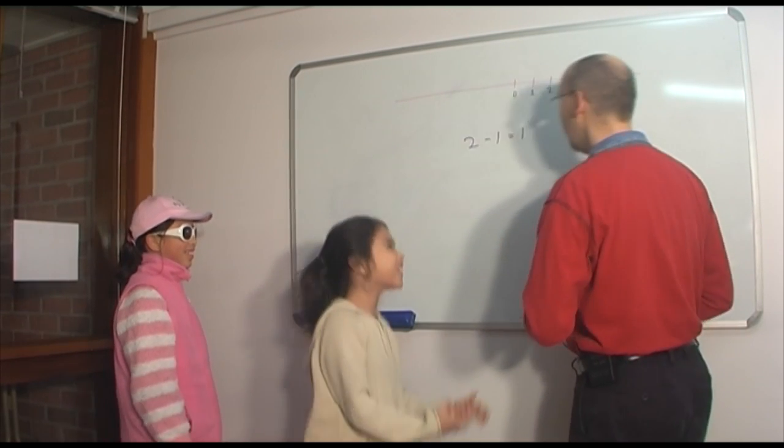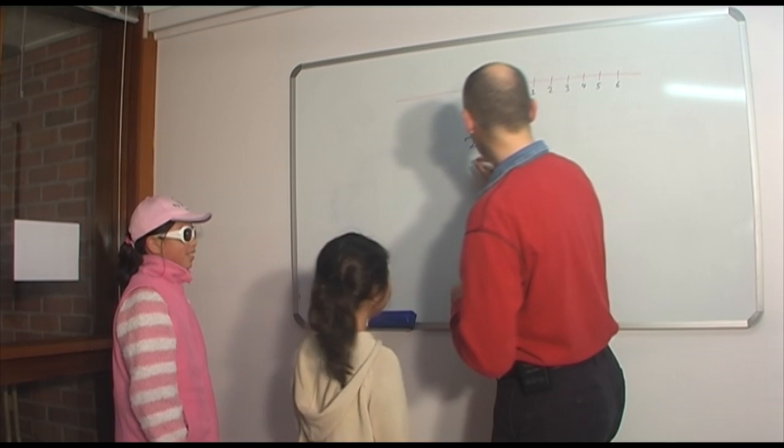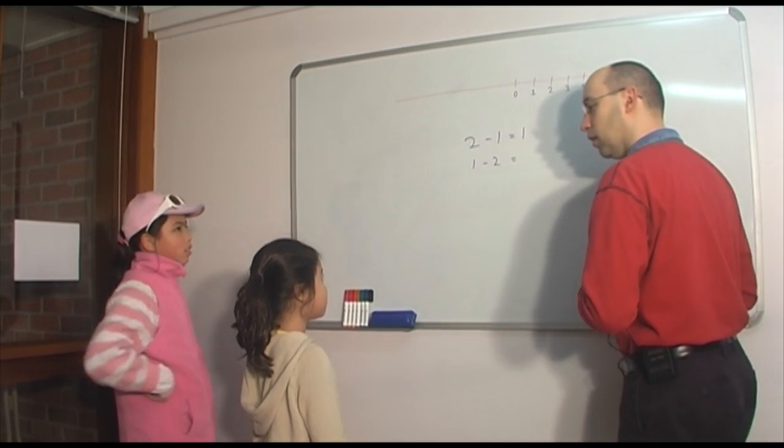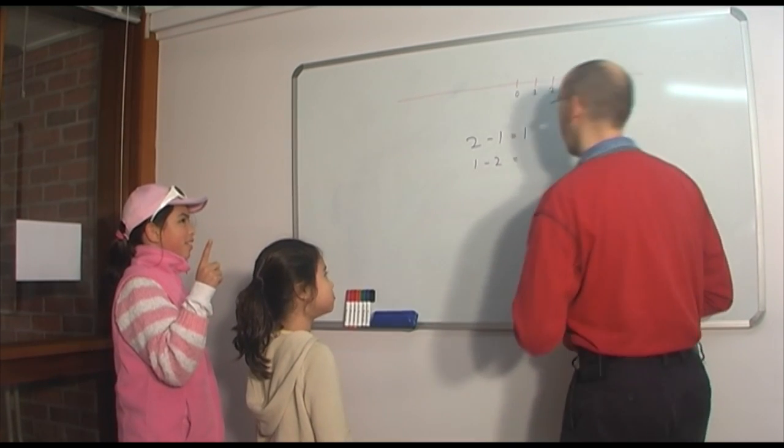Mr. Dottie. Okay, now, but what happens if I do 1 minus 2? It's a negative number. Minus 1. Aha, okay.